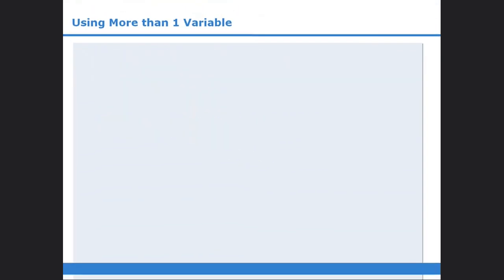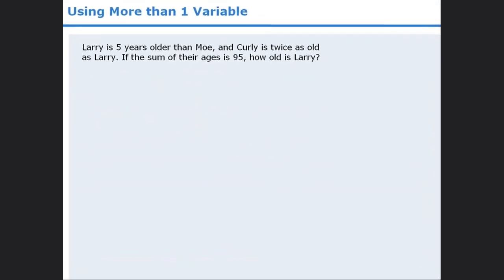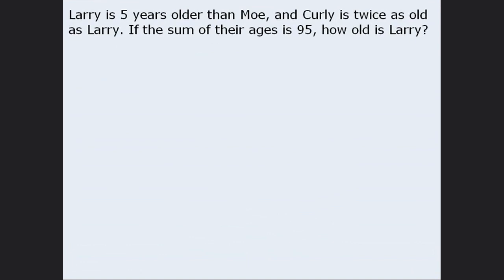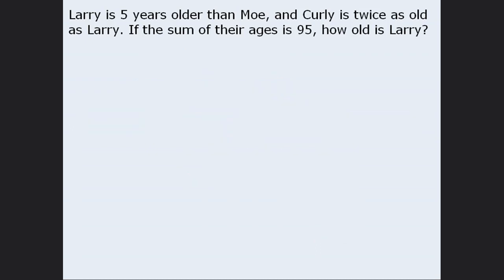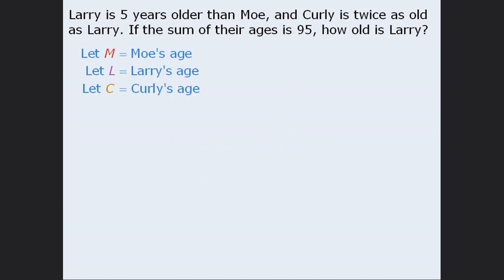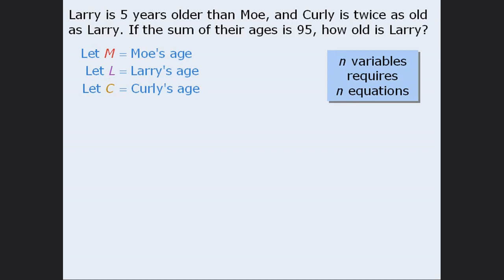Now let's examine another question from a previous lesson. In this question, we are given information about the ages of Larry, Moe, and Curly, and we want to find Larry's age. In the previous lesson, we solved the question using one variable. Now let's solve it using more than one variable. Let M represent Moe's age, L represent Larry's age, and C represent Curly's age. Since we have assigned three different variables, we will need three different equations in order to solve for each.